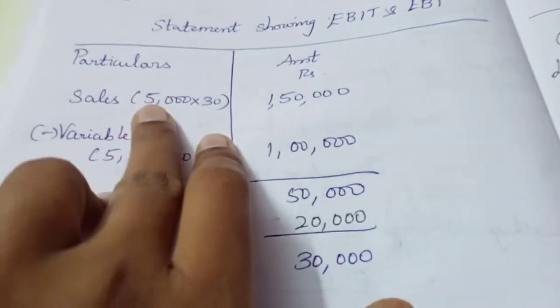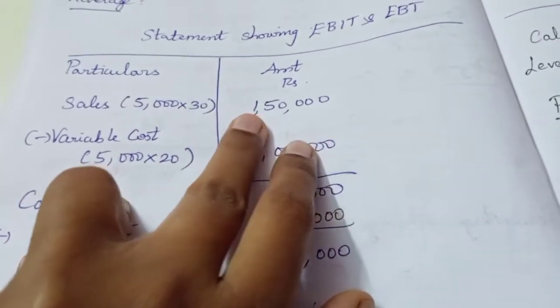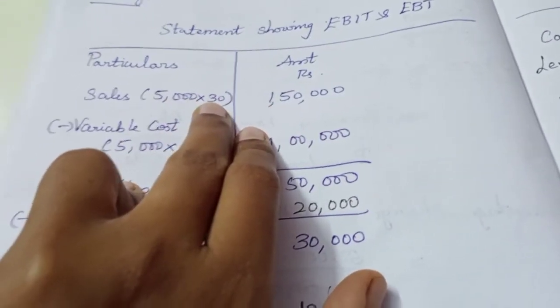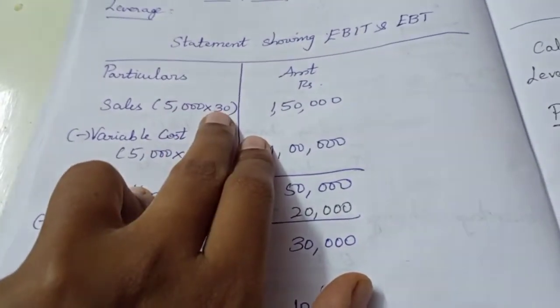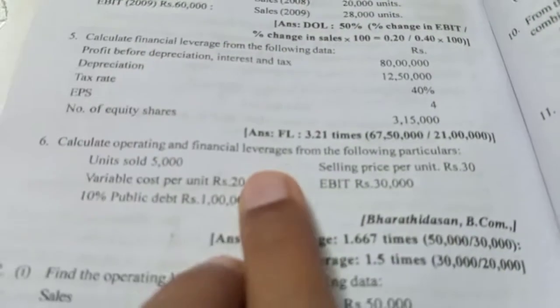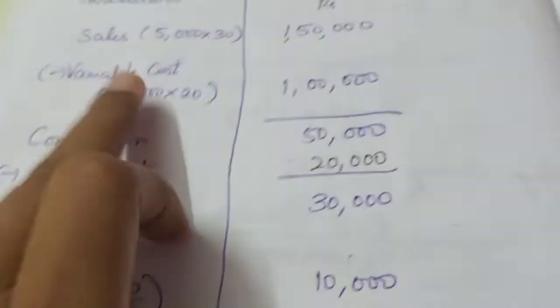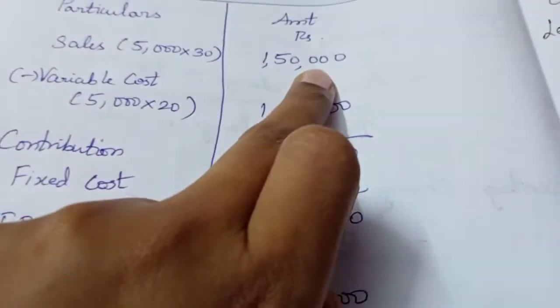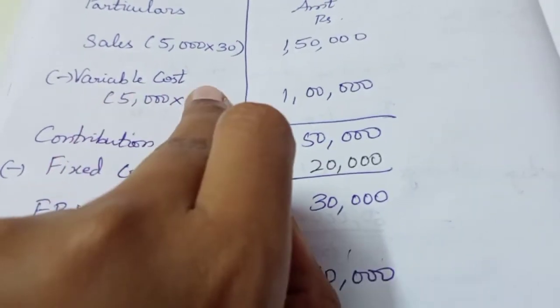First, we calculate Sales. Number of units sold is 5,000. Selling price per unit is 30. So 5,000 into 30 gives us 1,50,000.